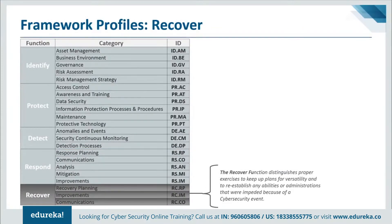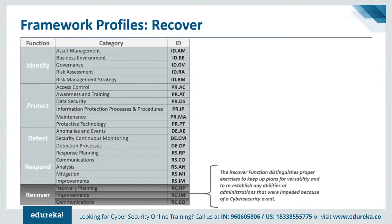Last but not least, we have the Recover function, used to develop and implement appropriate activities to maintain plans for resilience and restore any capabilities or services that were impaired due to a cybersecurity incident. The Recover function supports timely recovery to normal operations to reduce the impact from a cybersecurity incident. Examples of outcome categories include recovery planning, improvement, and communications. These five functions were selected because they represent the five primary pillars for a successful and holistic cybersecurity program, aiding organizations in expressing their management of cybersecurity risk at a high level and enabling risk management decisions.